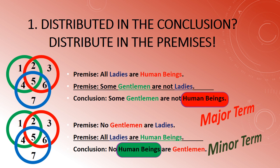If you're ever in doubt, go to your old standby — Venn diagrams. Diagramming the first argument: 'All ladies are human beings' fills in sections four and seven; 'Some gentlemen are not ladies' gives a floating X — a dead giveaway of an invalid argument. For argument two: 'No gentlemen are ladies' blocks sections five and six; 'All ladies are human beings' blocks seven and six. Is there room for something in the green and red circles simultaneously? Yes — section two shows it. Both arguments are invalid: fallacy of illicit major and fallacy of illicit minor.